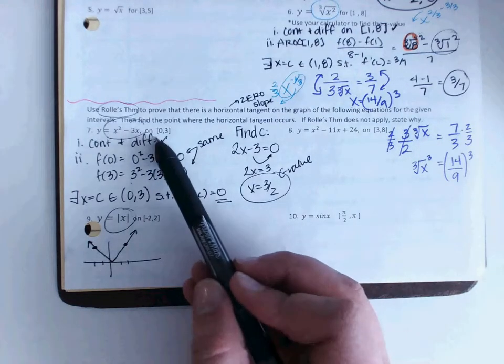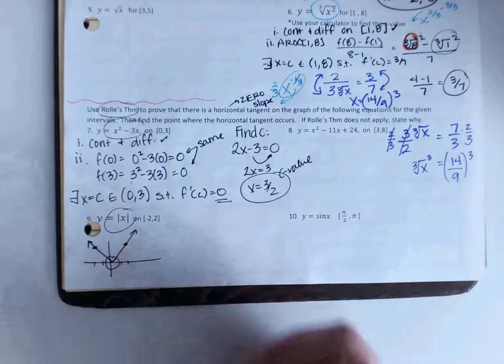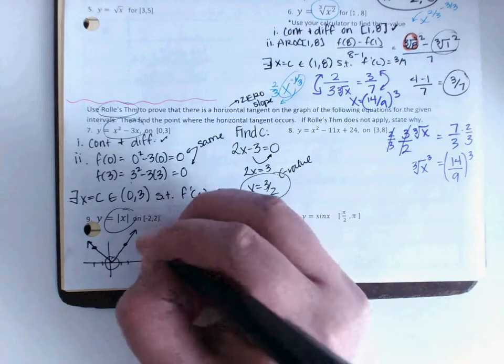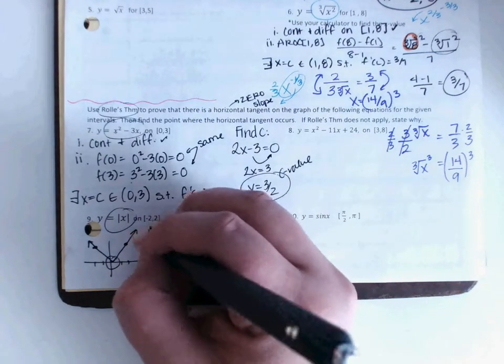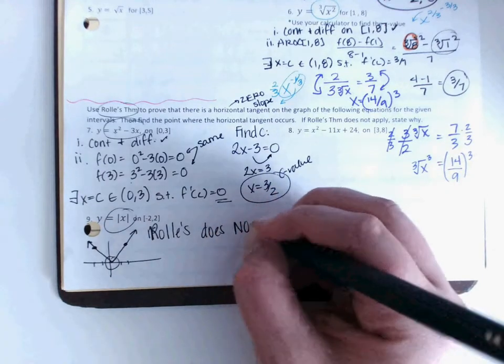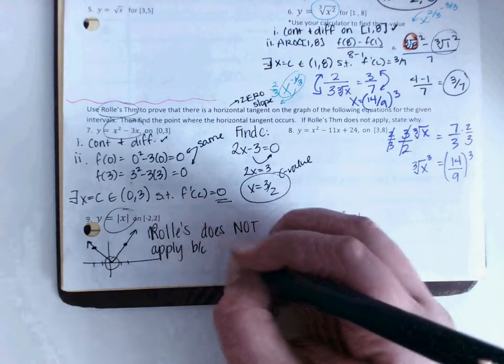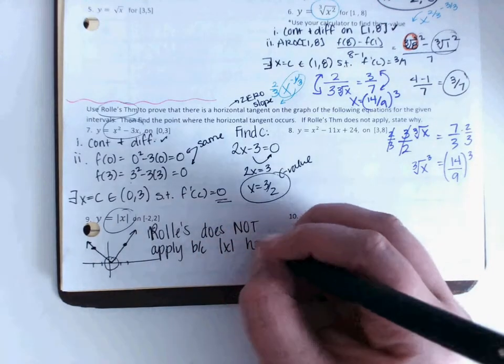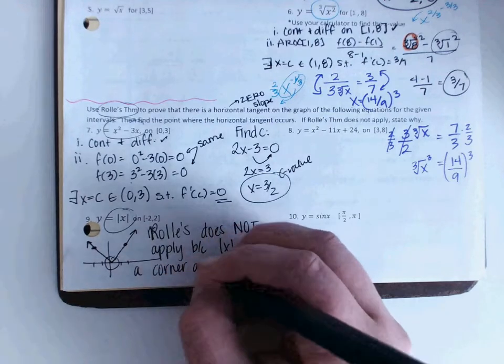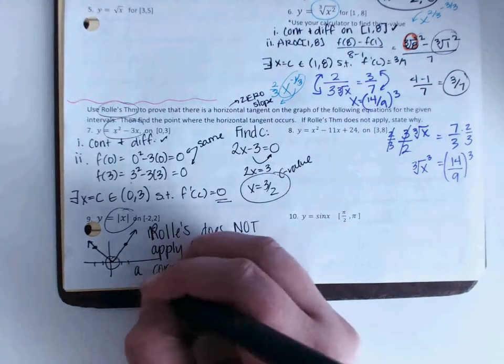So I notice immediately looking at this, there's a corner that is not differentiable. So I would put Rolle's theorem does not apply because absolute value x has a corner at 0 and is not differentiable.